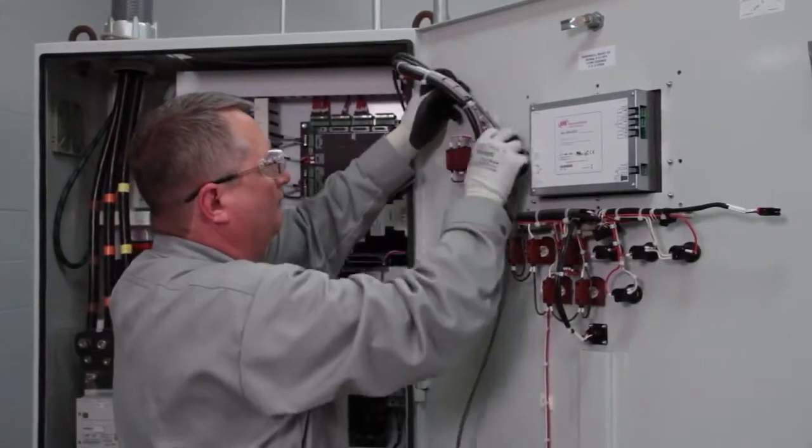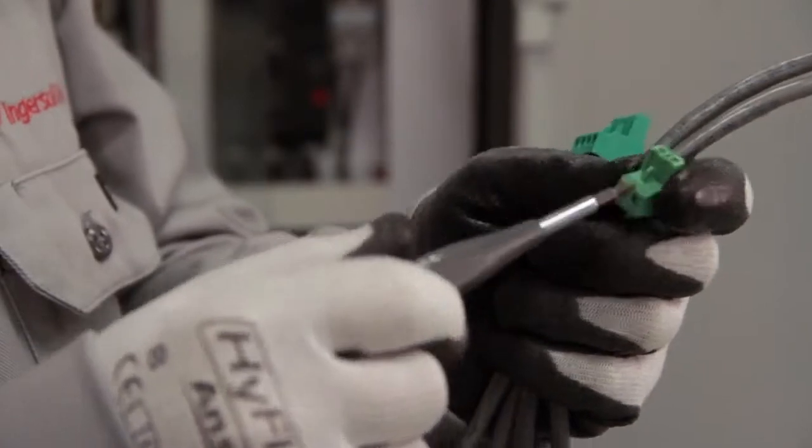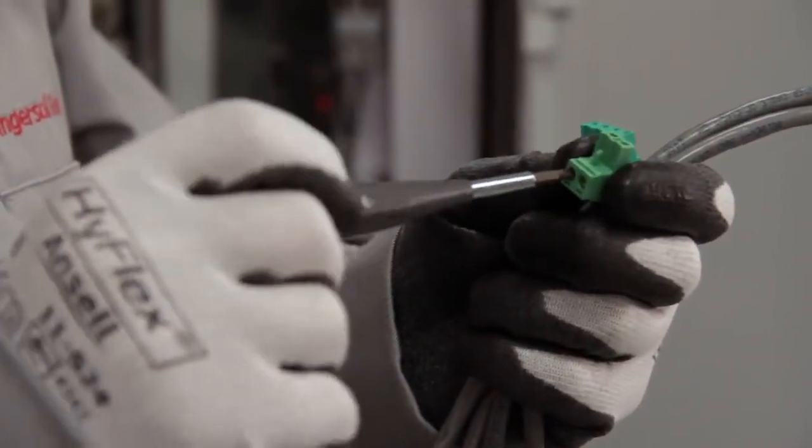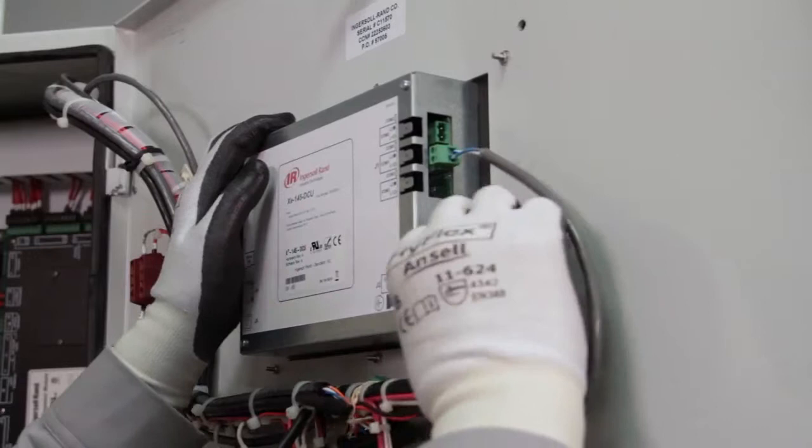One end of the VDC power connector inserts into the DCU, and the other end will connect to the new FMM logic module after it's installed.